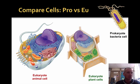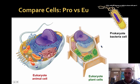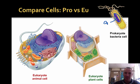'Eu' means true, and 'karyote' means seed, so 'eu' means true nucleus. As you can see up here in the diagrams, this is the prokaryotic cell — this is where the nucleoid is found, that's where the DNA is in this cell. In eukaryotic cells, the DNA is found inside the nucleus itself.